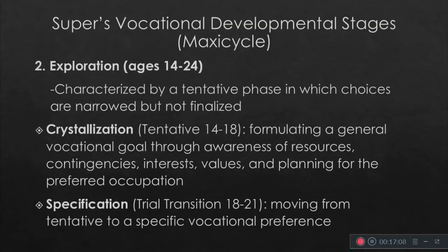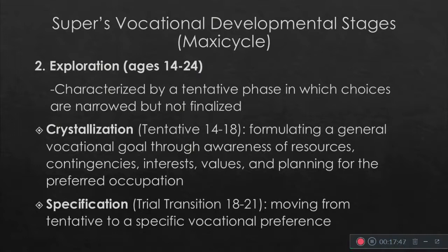Exploration is the second stage. It is characterized by a tentative phase in which choices are narrowed but not finalized. Crystallization is tentative — around ages 14 to 18 — where they are formulating a general vocational goal through awareness of resources, contingencies, interests, values, and planning for a preferred occupation. They are a bit more ready and clearer than in the first stage.